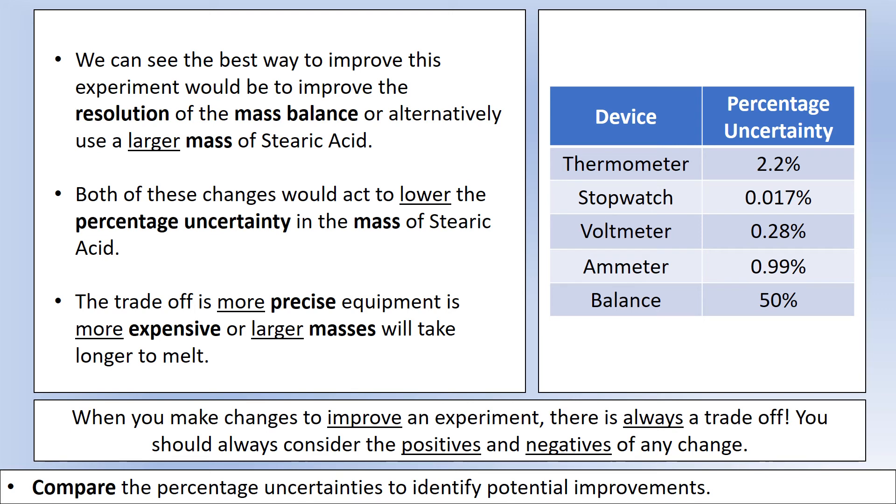In terms of thinking about ways we could improve our experiment, clearly we need to do something to address the mass measurement. We could use a system with a better resolution, or that can measure to more decimal places, or we could use a much larger quantity of stearic acid. Either of those things would decrease the percentage uncertainty. But if we want to use more precise equipment, that's going to be more expensive. Or we could use a larger mass of stearic acid, but the trade-off there being it'll take a much longer time to melt, so you'd have to invest more time in the experiment. As we can see, there's always a trade-off with any improvement that you identify, and we need to decide whether it's particularly worth it or not.